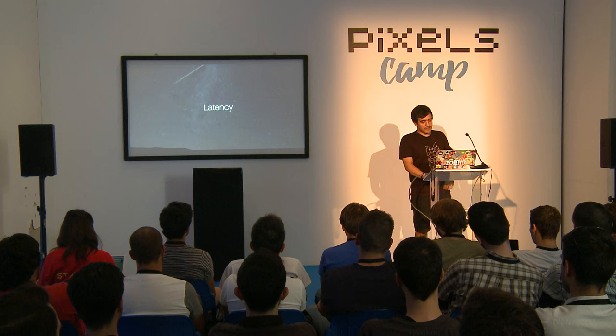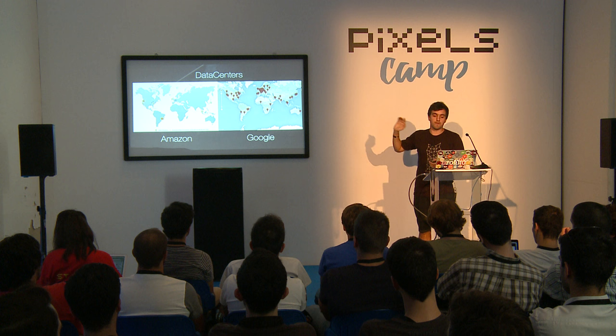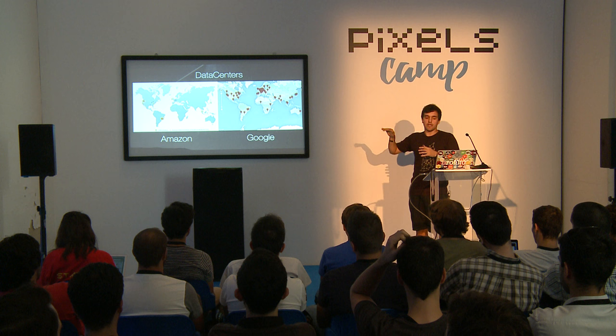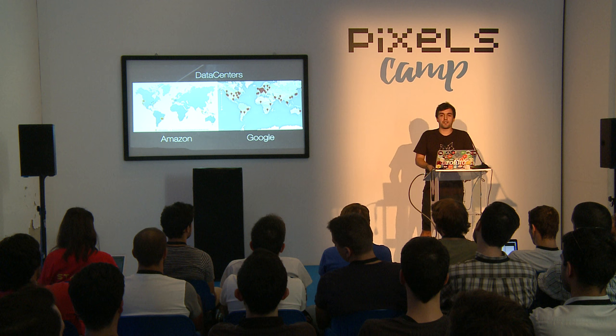Then there's the problem of latency. Looking at where Amazon and Google have their data centers, you can see clearly there are privileged areas — Europe, the United States, a bit in Brazil, parts of Asia. All other parts of the world don't have a data center nearby. The solution is not just to build more data centers; that doesn't scale. We have to find a way to transfer data around the network and make it smarter.